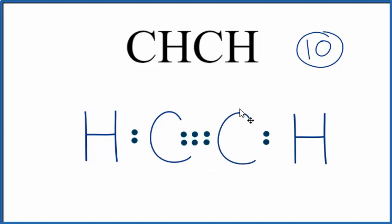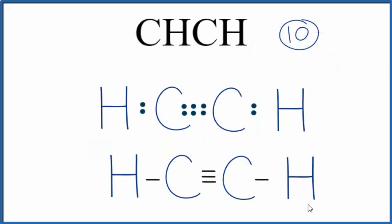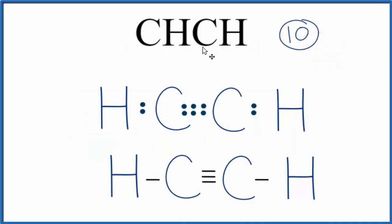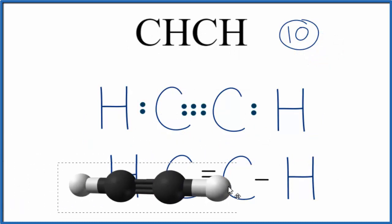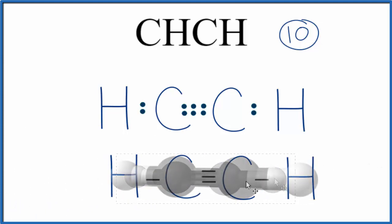This is the Lewis structure for CHCH, also called C2H2. Sometimes you'll see this drawn with lines representing the bonds. So this is another way we could draw the Lewis structure for CHCH. If we wanted to look at the molecular geometry, we would see that it's a linear molecular geometry. It would look like this, where we have our carbons there in the center. Hydrogen is on the outside with a triple bond between the carbons.